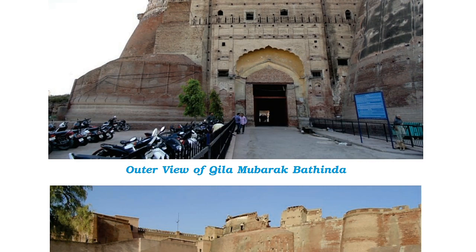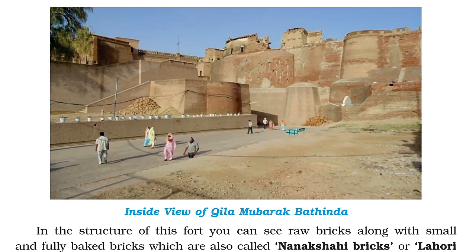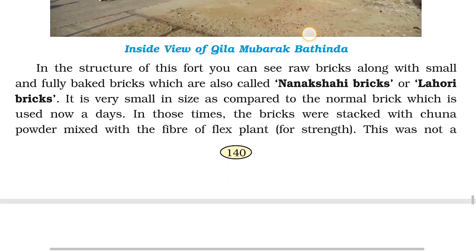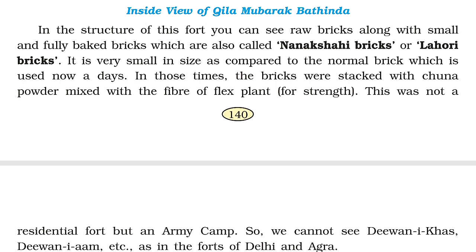This is how it looks inside — the inside view of Kila Mubarak. In the structure of this fort you can see raw bricks along with small and fully baked bricks, which are also called Nanak Shahi bricks or Lahori bricks. They are very small in size compared to normal bricks used nowadays. In those times, bricks were stacked with tuna powder mixed with the fiber of flax plant for strength. This was not a residential fort, but an army camp, so we cannot see Diwan-e-Khas, Diwan-e-Aam, etc., as in the forts of Delhi and Agra.